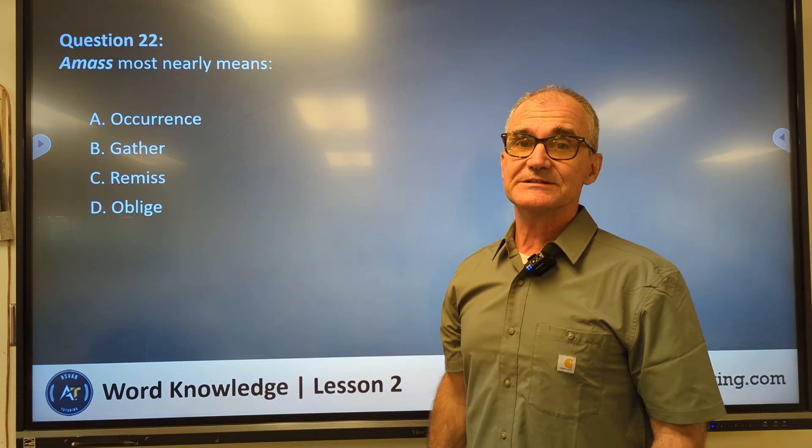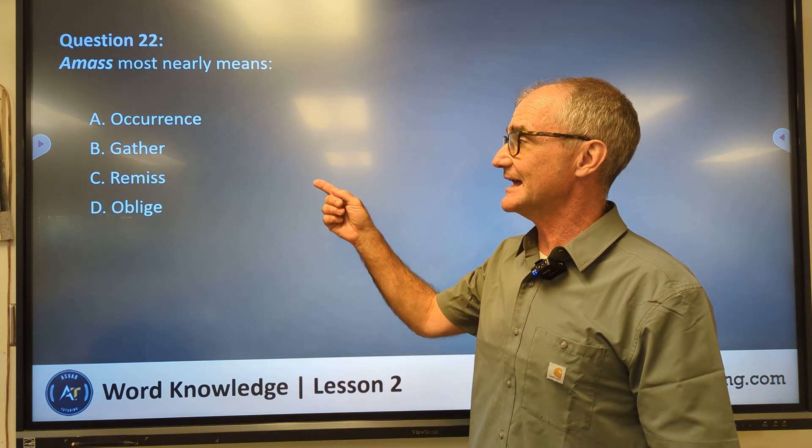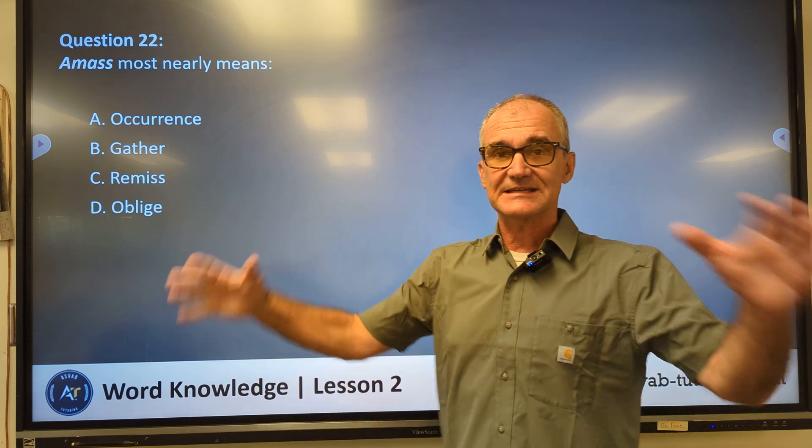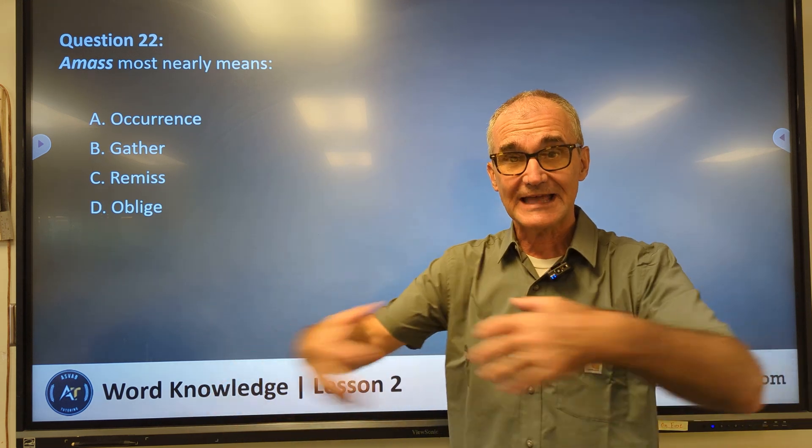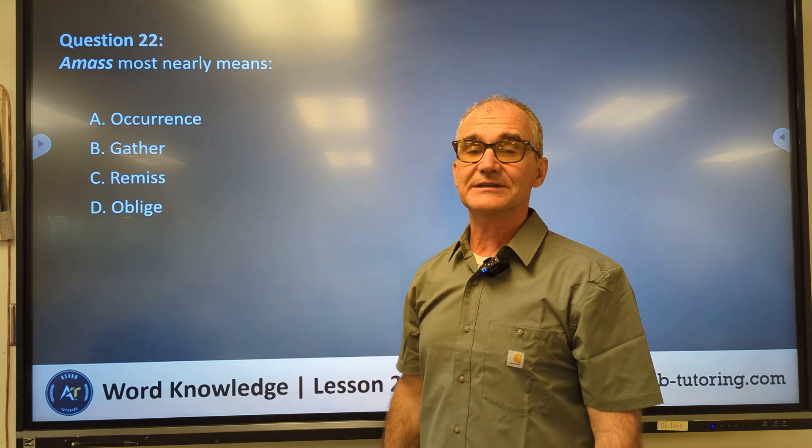Number 22, amass most nearly means an occurrence, gather, remiss, or oblige. Amass means to get everything together or to gather things together. Correct answer, answer B, right there.